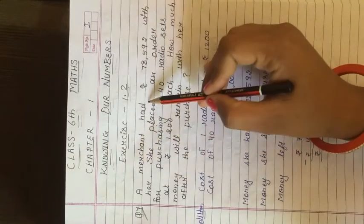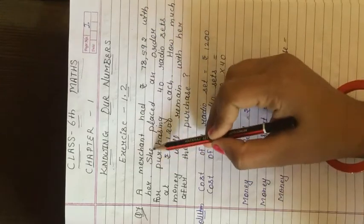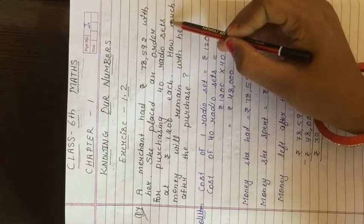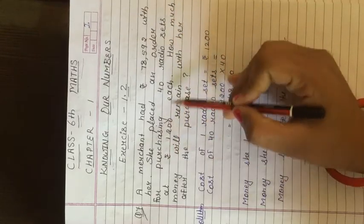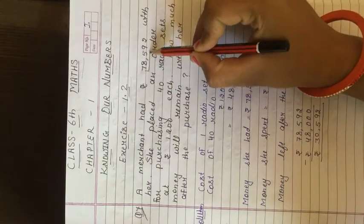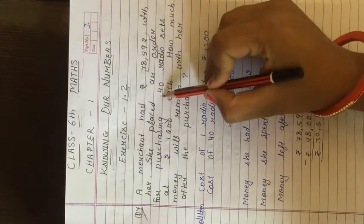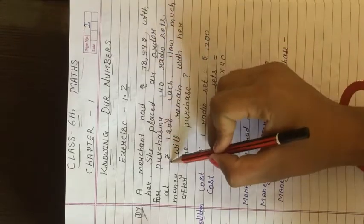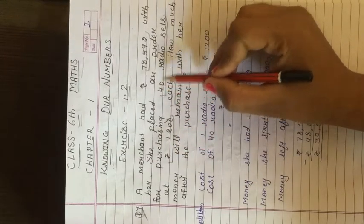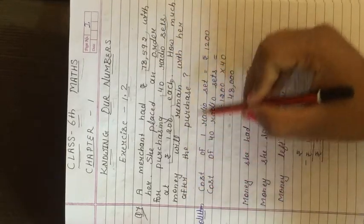A merchant had Rs. 78,592 with her. She placed an order for purchasing 40 radio sets at Rs. 1200 each. A merchant has Rs. 78,592 total. She ordered 40 radio sets at Rs. 1200. How much money will remain with her after purchase?